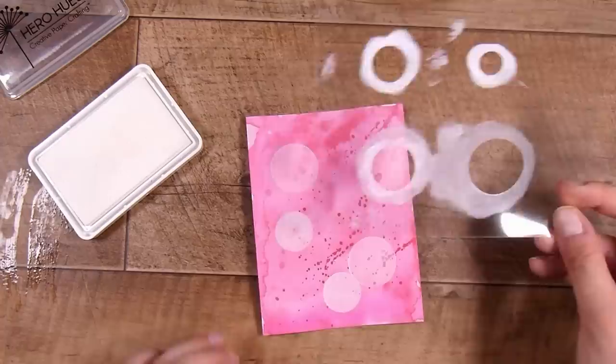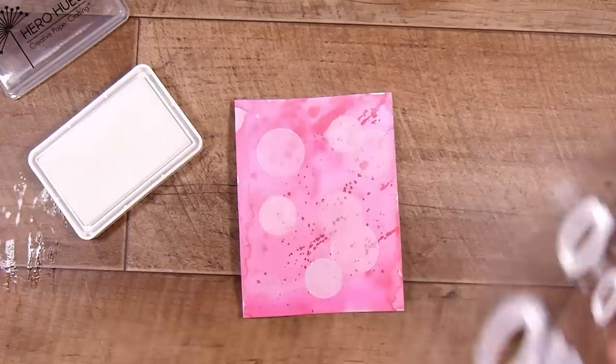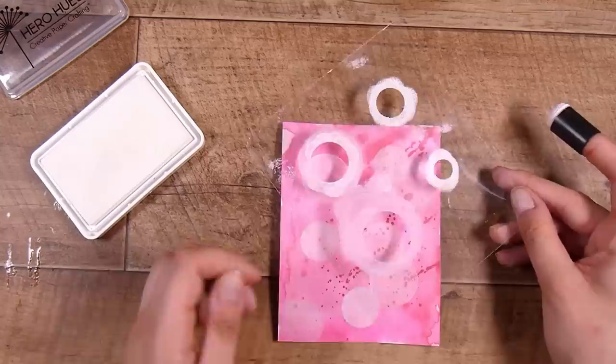But once you think you have enough then pop it to the side. Then as I said, I added some more ink onto this pink one. I wanted a little bit more, a little bit darker background but a little bit more interest. So you can see there is all sorts of splatters and I mean this is just not a perfect background but it works perfectly for this technique.